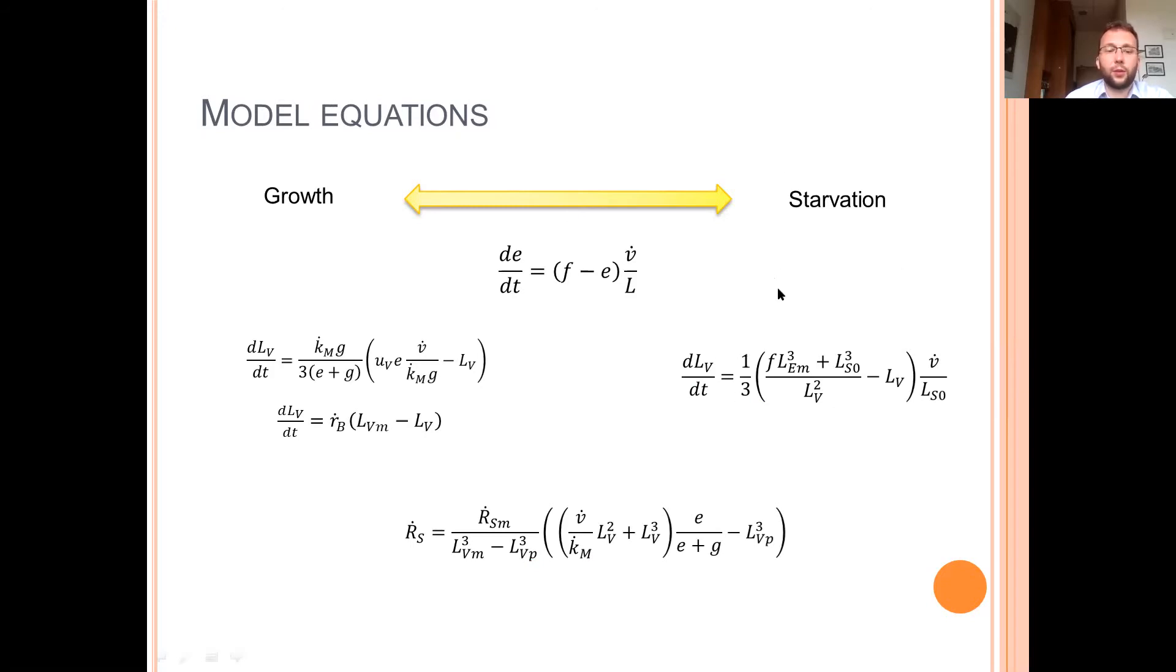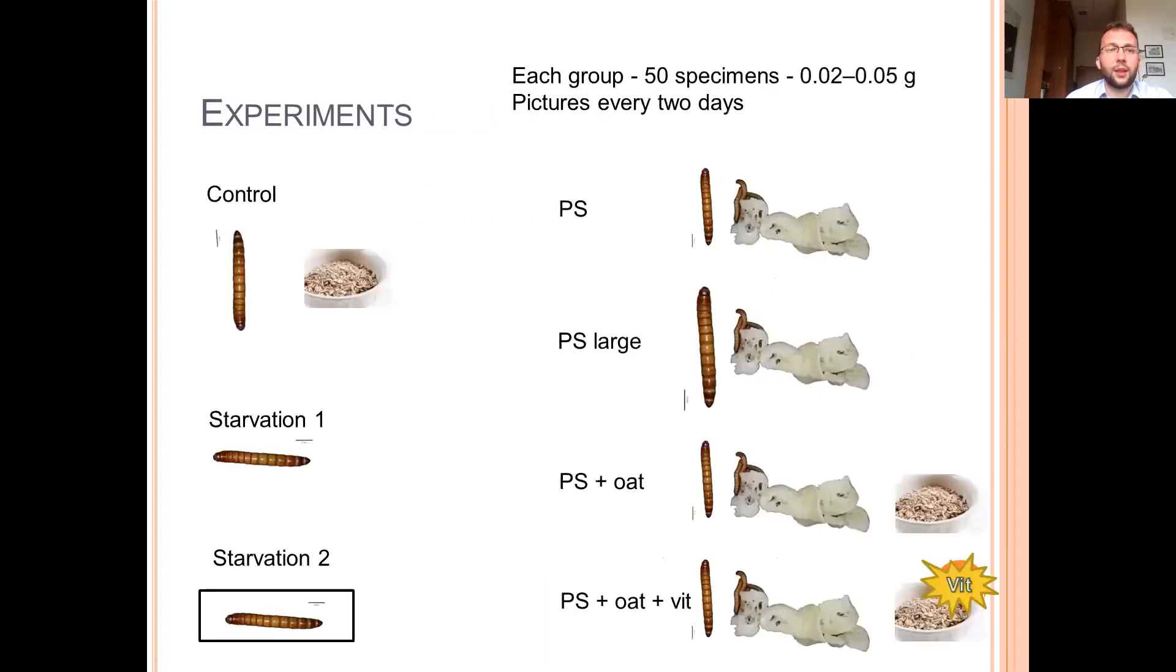So in the end, let's go to the experiment. We prepared seven groups of larvae, each with different feeding conditions, 50 specimens in each group. The control group was fed ad libitum with oats. Some groups were fed with polystyrene as a sole source of food.